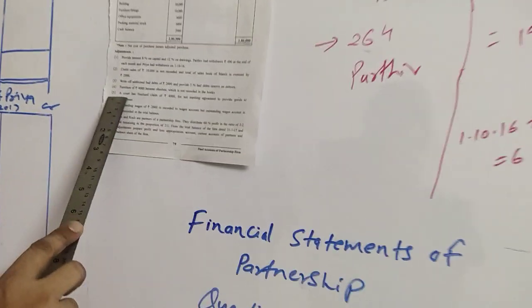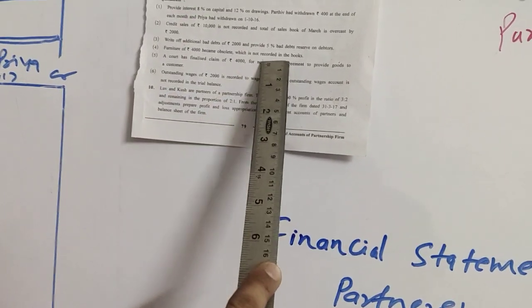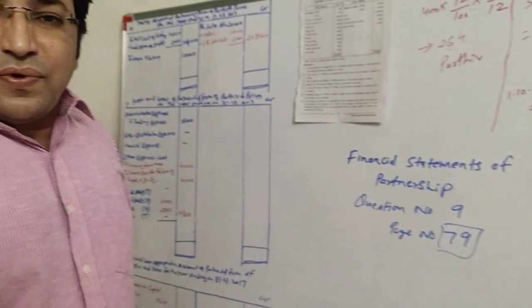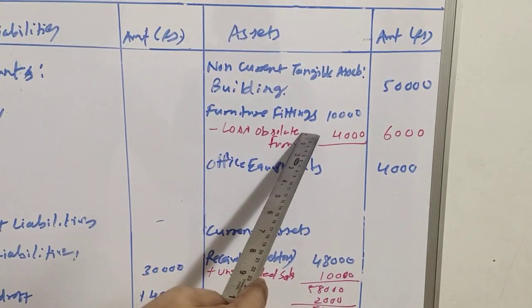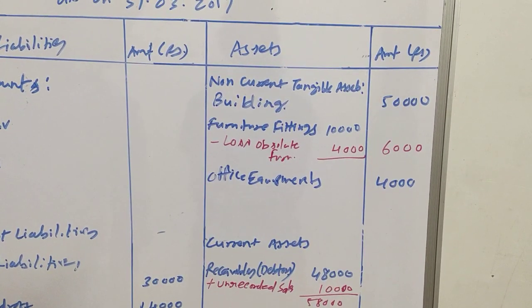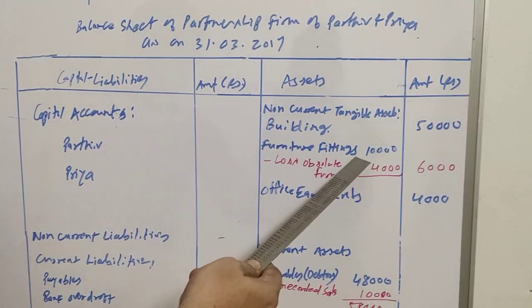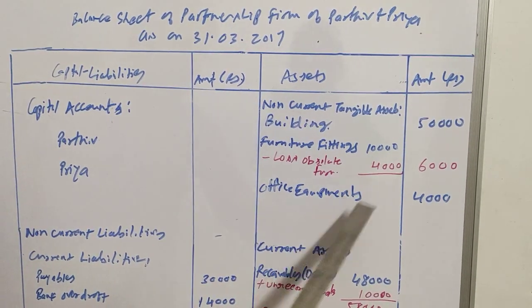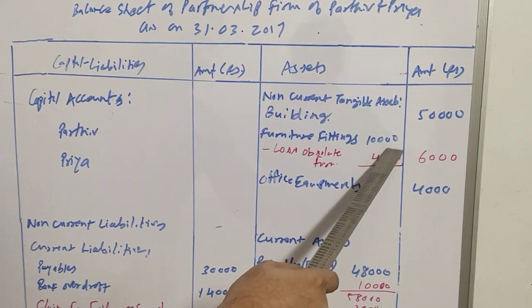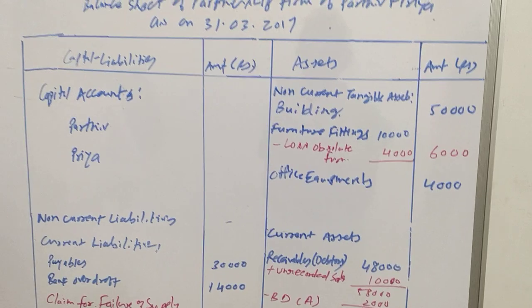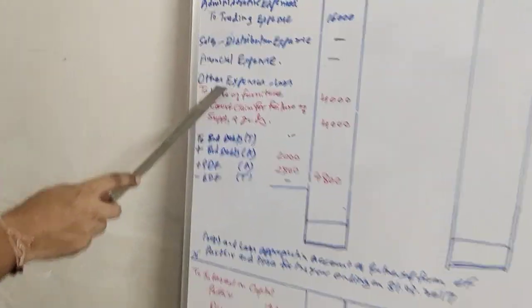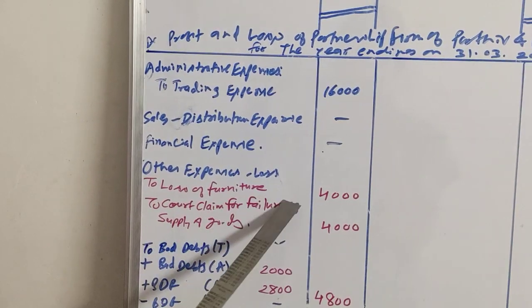Next adjustment: furniture of Rs.4,000 became obsolete, which is not recorded in the books. That means the furniture is of no use — it is a total loss. It is deducted from furniture: Rs.10,000 minus Rs.4,000 obsolete furniture gives Rs.6,000 in the outer column. The other effect, as it is a loss, is written at the debit side of the profit and loss account under the heading 'Other expenses and losses' — loss of furniture Rs.4,000.